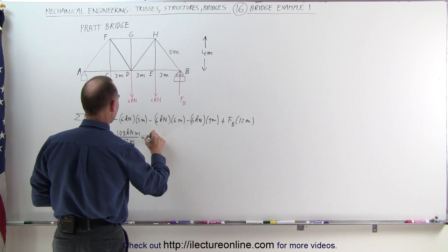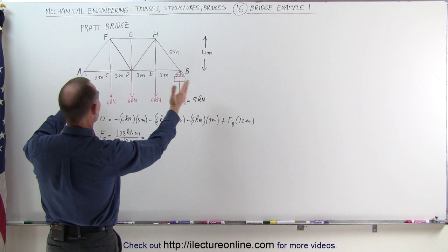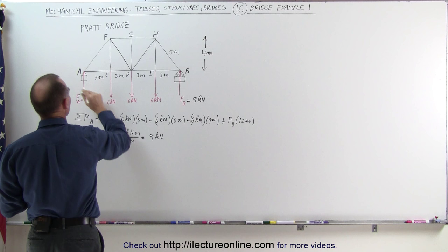So the magnitude of the force at B is 9 kilonewtons. Once we have that, and since everything is in symmetry here, we can assume the force at A must be the same — also 9 kilonewtons, because the bridge structure is perfectly symmetric.